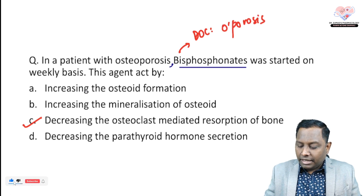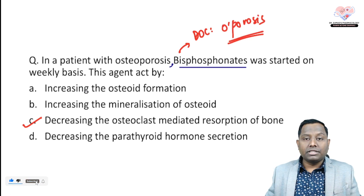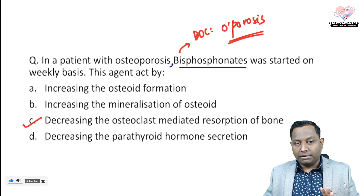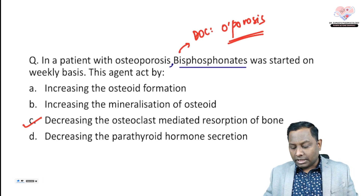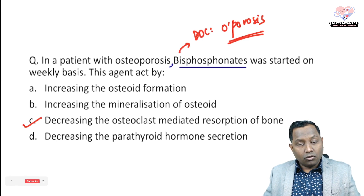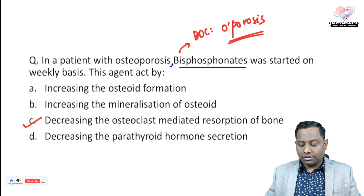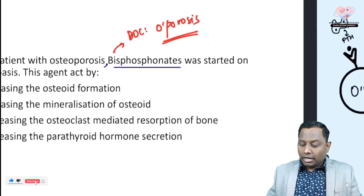So the most appropriate answer is: decreasing the osteoclast-mediated resorption of bone. Bisphosphonate is the drug of choice for osteoporosis in any patient, any age group, regardless of other factors. It has no role in decreasing parathyroid hormone secretion.